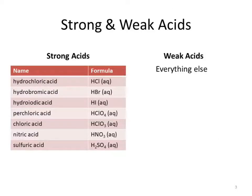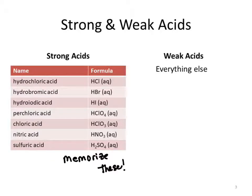For our strong and weak acids — here are our strong acids. There are seven of them, and we have to memorize these. Weak acids are anything else — anything that is not one of the seven strong acids you memorized is indeed a weak acid.